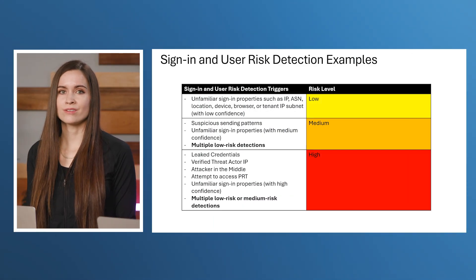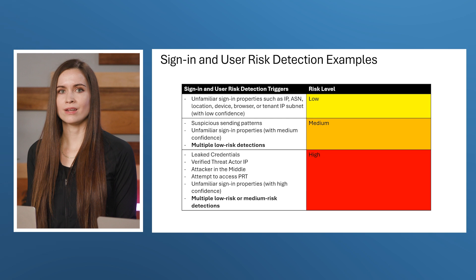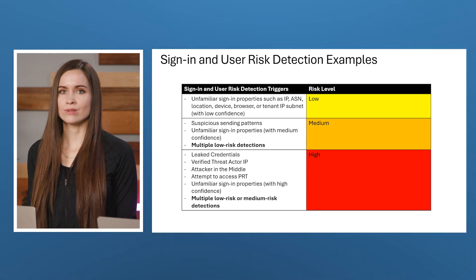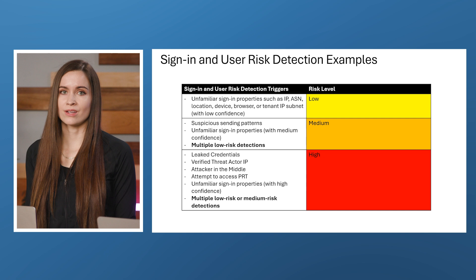Identity protection categorizes risk into three levels: low, medium, and high. These levels measure both the severity of the threat and our confidence in the detection being a true positive.